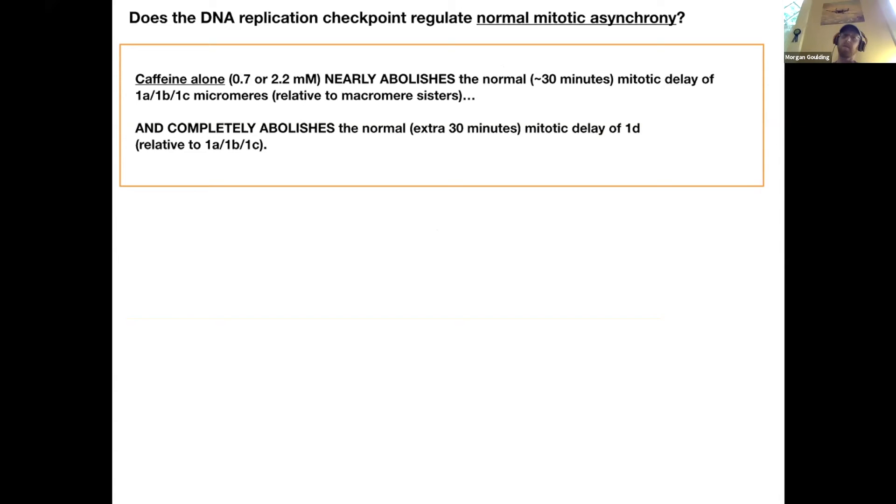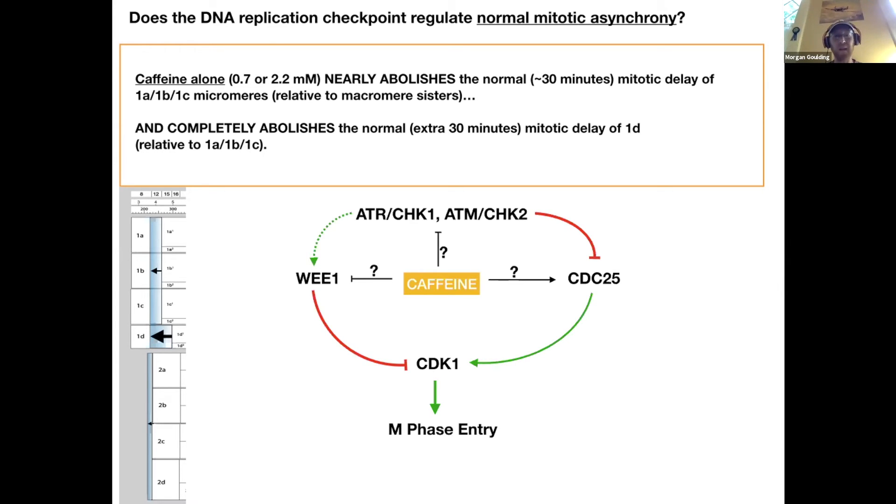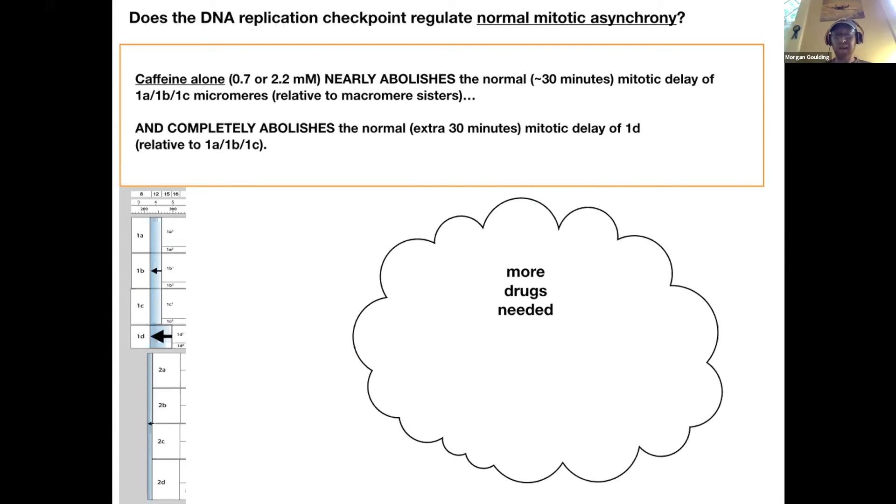I wanted to ask what's this thing for? And I wondered if it is involved in regulating the normal mitotic asynchrony where the micromeres divide quite a bit later than their sisters. So I tried caffeine alone and it works. All the micromeres divide early, and the normally latest dividing one divides on schedule with its cousins. So this whole asynchrony is almost wiped out by caffeine. Now, of course, the problem is caffeine is a very bad drug because it is reputed to inhibit Wee1, inhibit the ATR check one or ATM check two. And actually stimulate CDC25. So obviously we need to try better inhibitors. That's for future directions for this story.